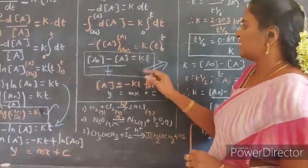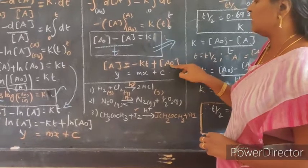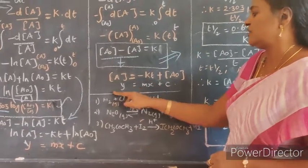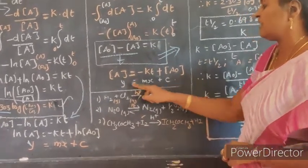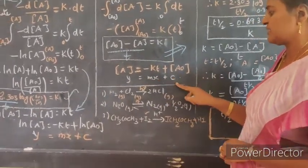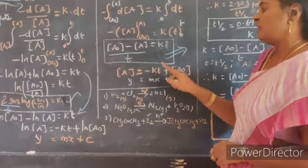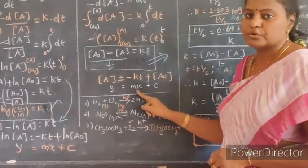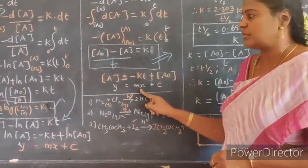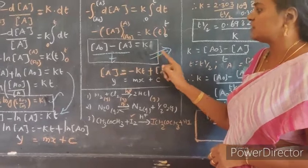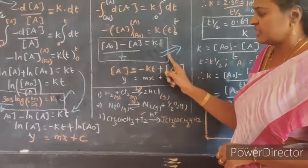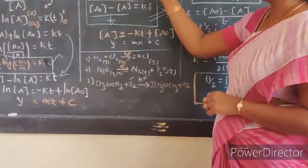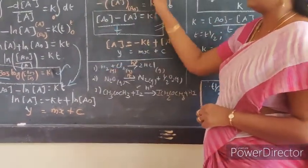Once again we take this expression and make it as an equation of a straight line Y = mx + C. We are able to get a y-intercept and a negative slope for this also. This is for zero order reaction and this is for first order reaction - thus we can derive the rate constants.